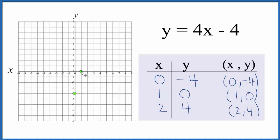Then we have x is 1, y is 0, and then we have x is 2, y is 4, and they all line up.